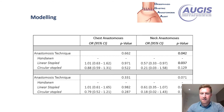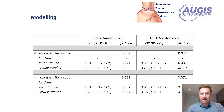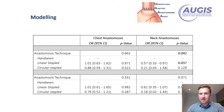We then conducted logistic regression modelling to look at differences in leaks or necrosis for the different anastomotic techniques, split into chest and neck anastomosis. In the unadjusted analysis for chest anastomosis, neither linear stapled nor circular stapled anastomosis performed better than hand sewn. For neck anastomosis, linear stapled anastomosis appeared to have a lower leak or necrosis rate than hand sewn, with an odds ratio of 0.57 and p-value of 0.037, and circular stapled also appeared slightly better with an odds ratio of 0.21 and p-value of 0.129.